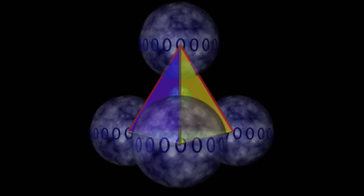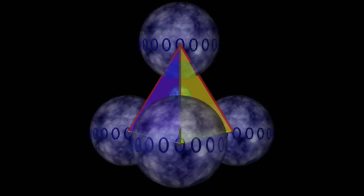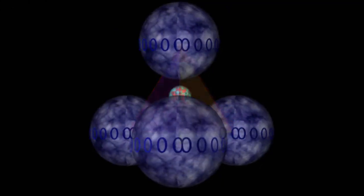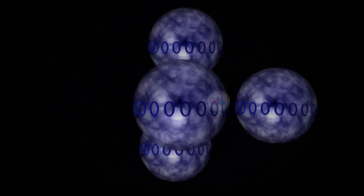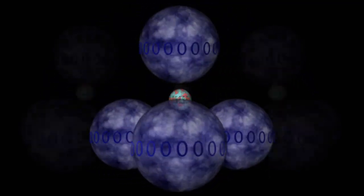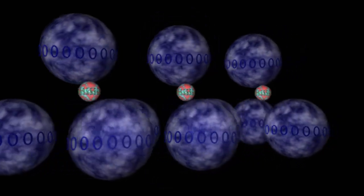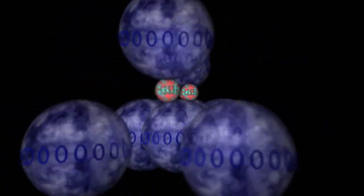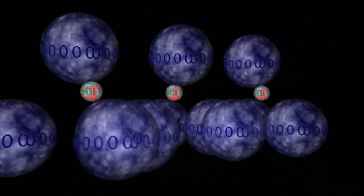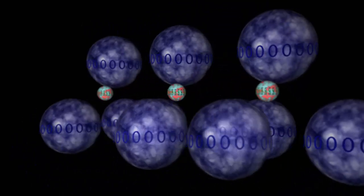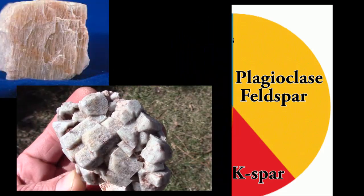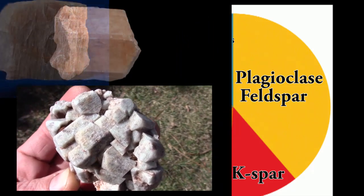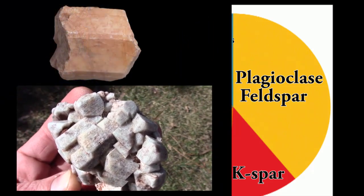Welcome back, Mineralogy fans! Almost everywhere on Earth, the rocks below us are made of silicate minerals. Maybe you have some carbonates or sulfates below you, but go down far enough and the basement rock is mostly silicate minerals, and of that majority of the Earth's crust, almost half are the mineral group we call feldspar, a word with the German roots meaning a field rock with no ore.